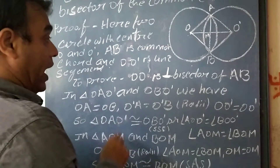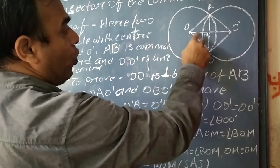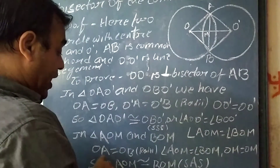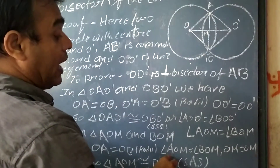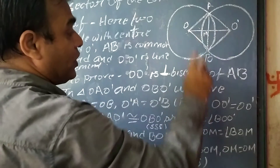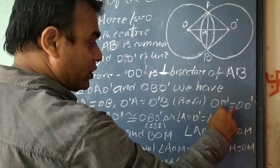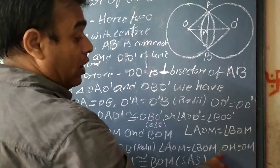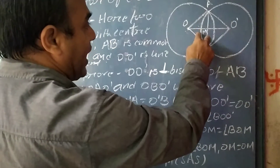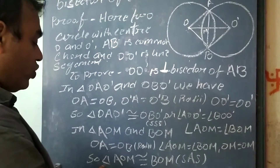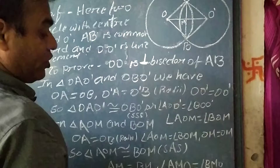Now, in triangles AOM and BOM: AO equal to OB, that is the radius of the circle; angle AOM equal to angle BOM, as proved above; and OM equal to OM, that is common. So these two triangles are congruent — triangle AOM is congruent to triangle BOM by SAS congruence property.